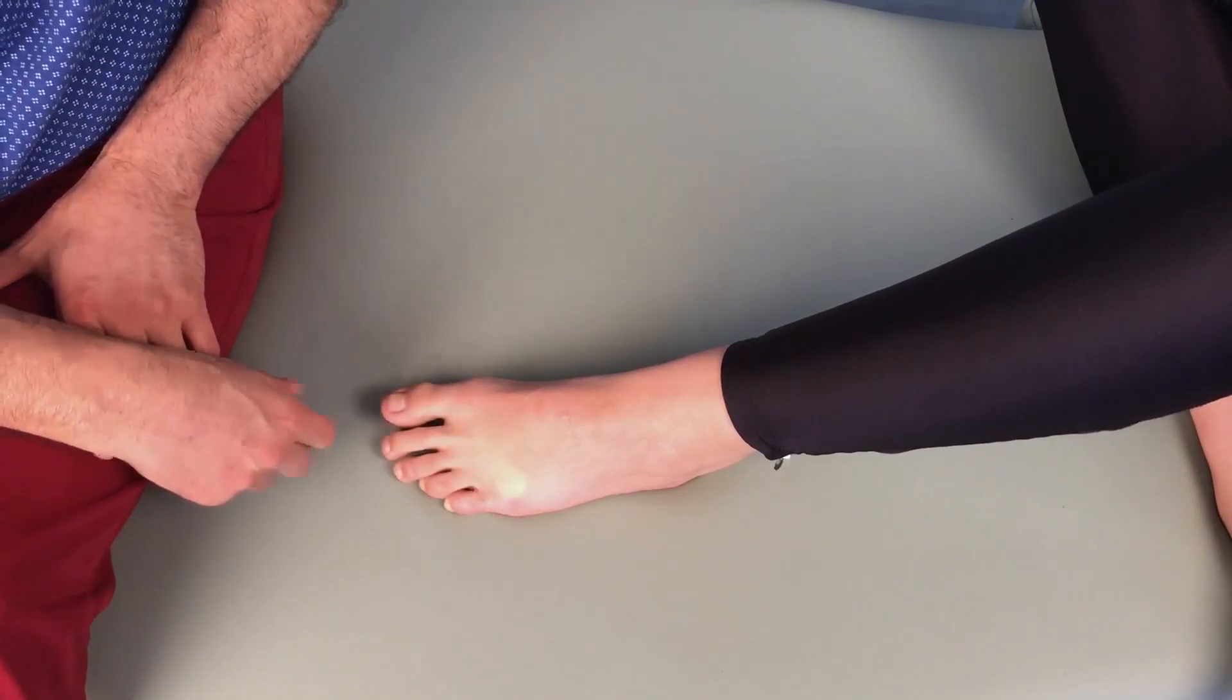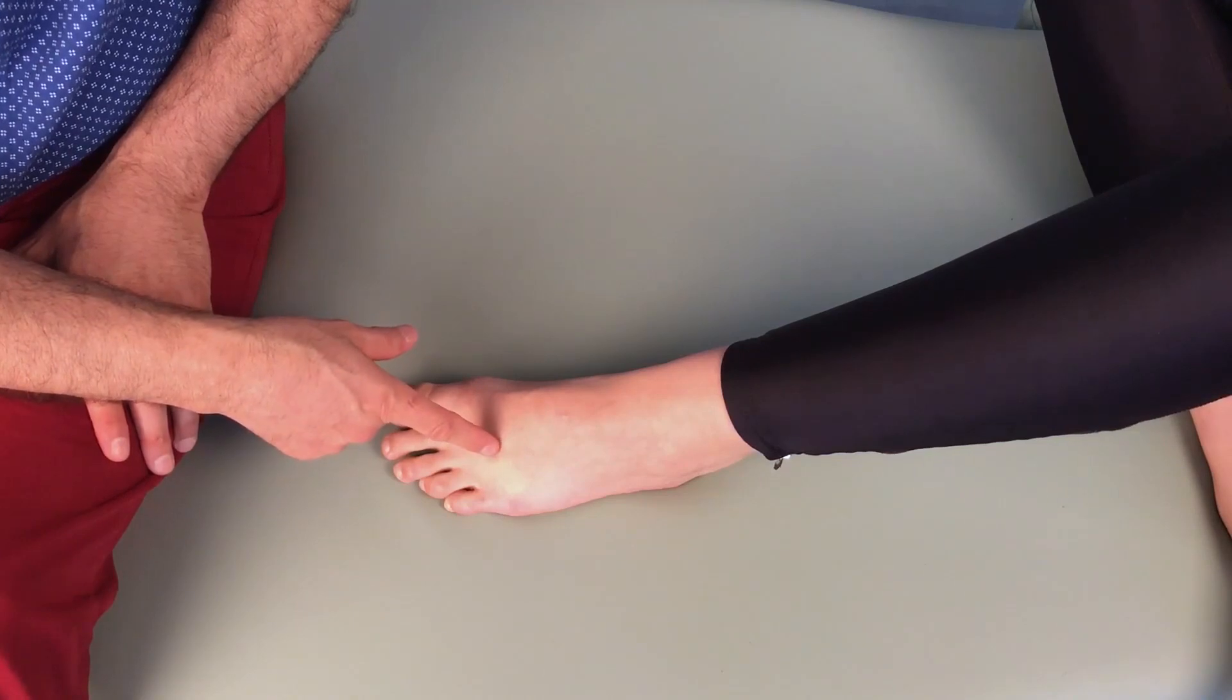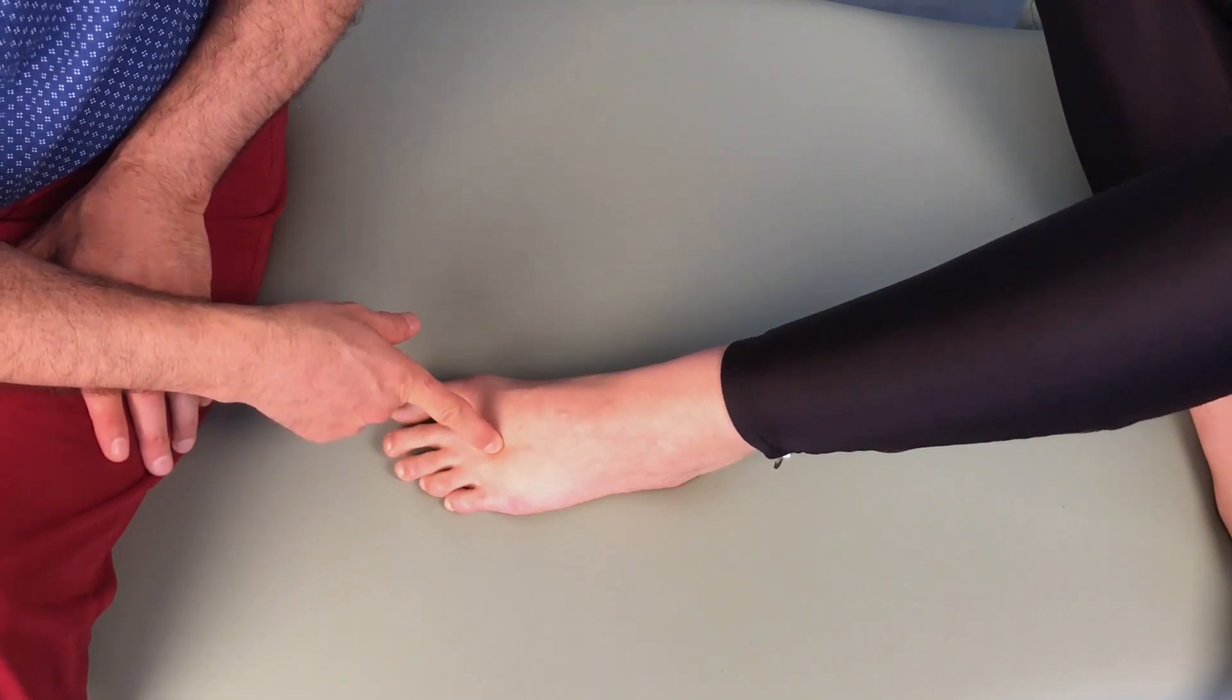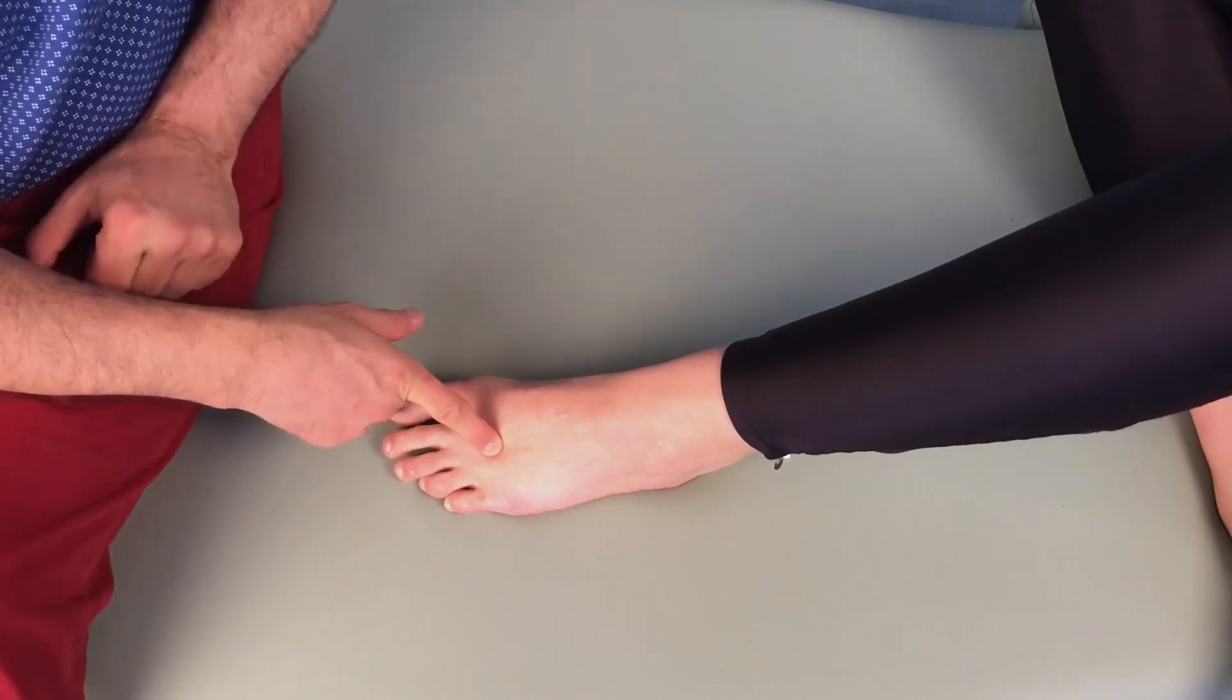Because of the anatomy of the interdigital nerves here, most commonly Morton's neuroma occurs between the third and fourth metatarsals, between the metatarsals of the third and fourth toes.